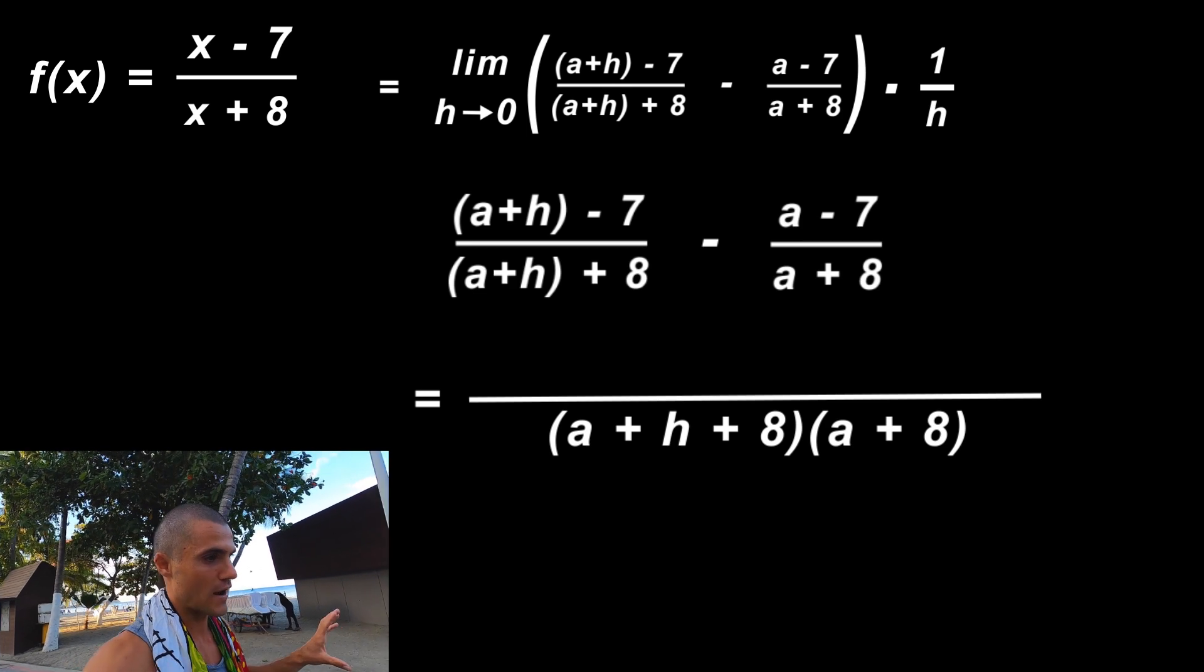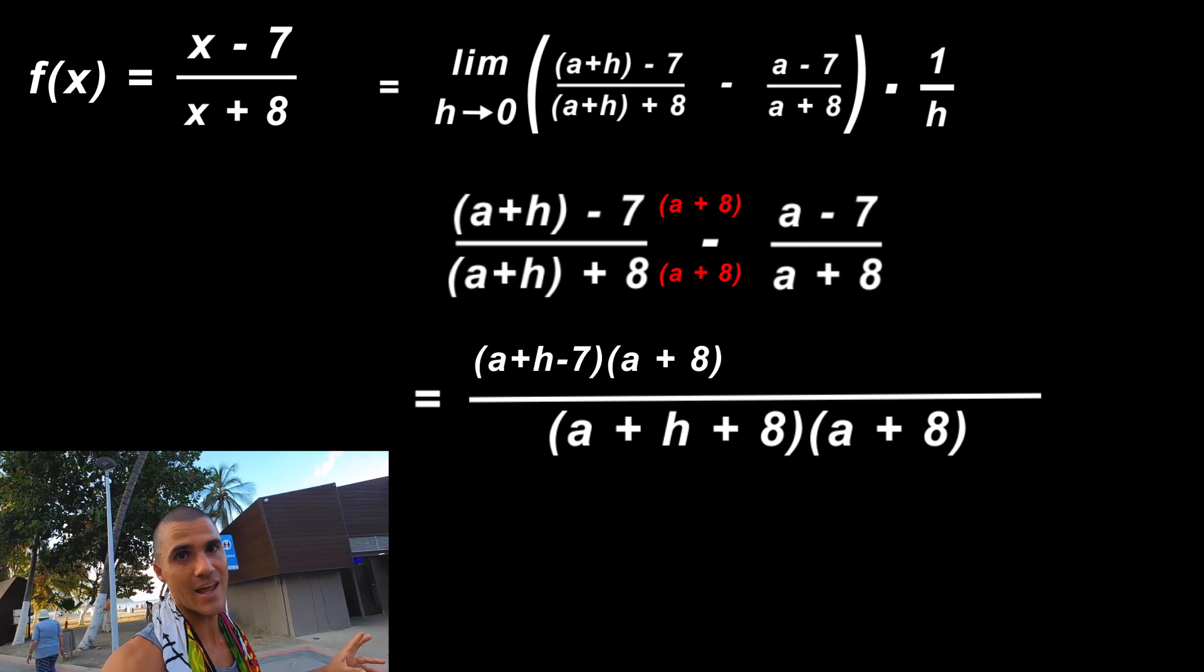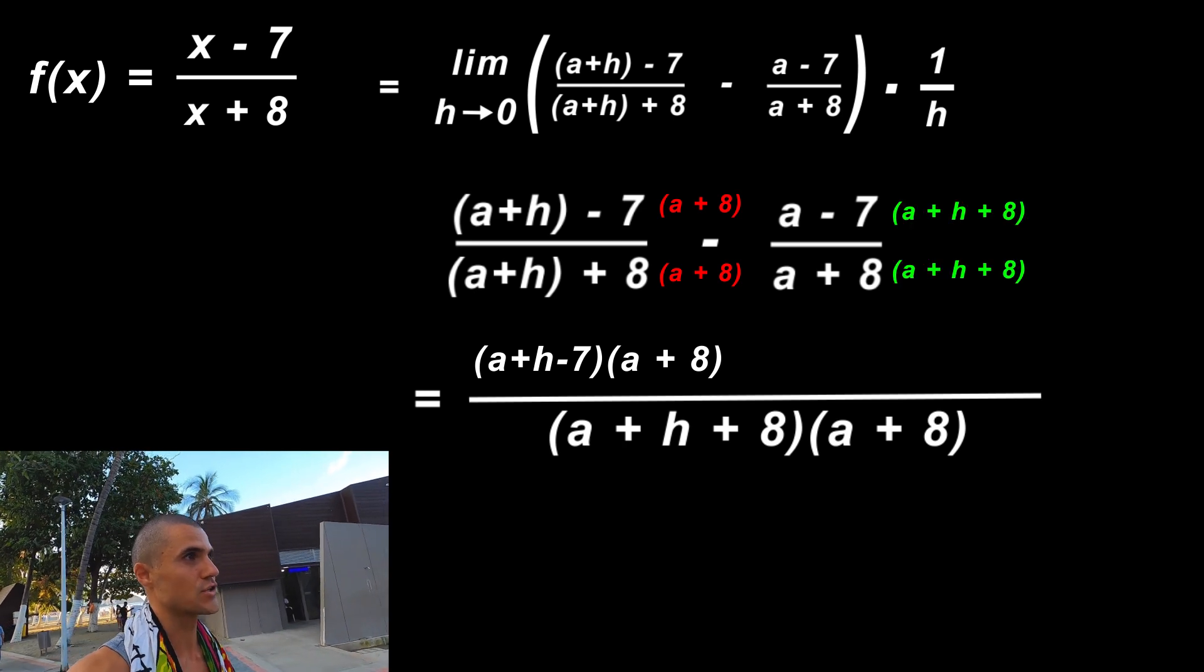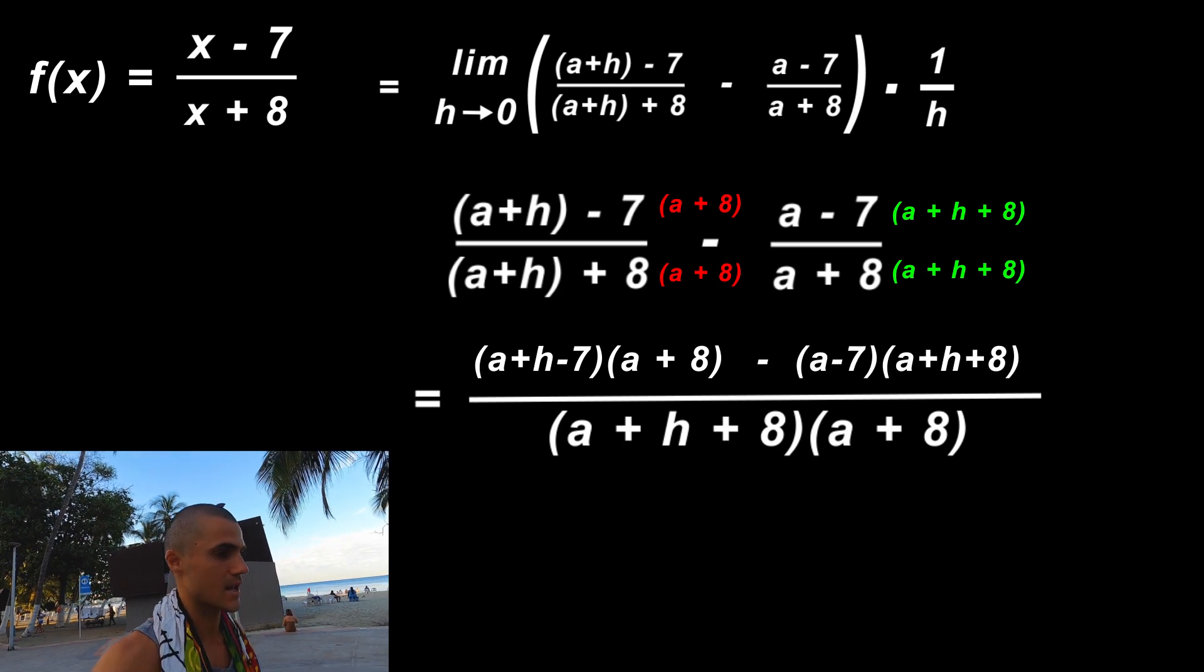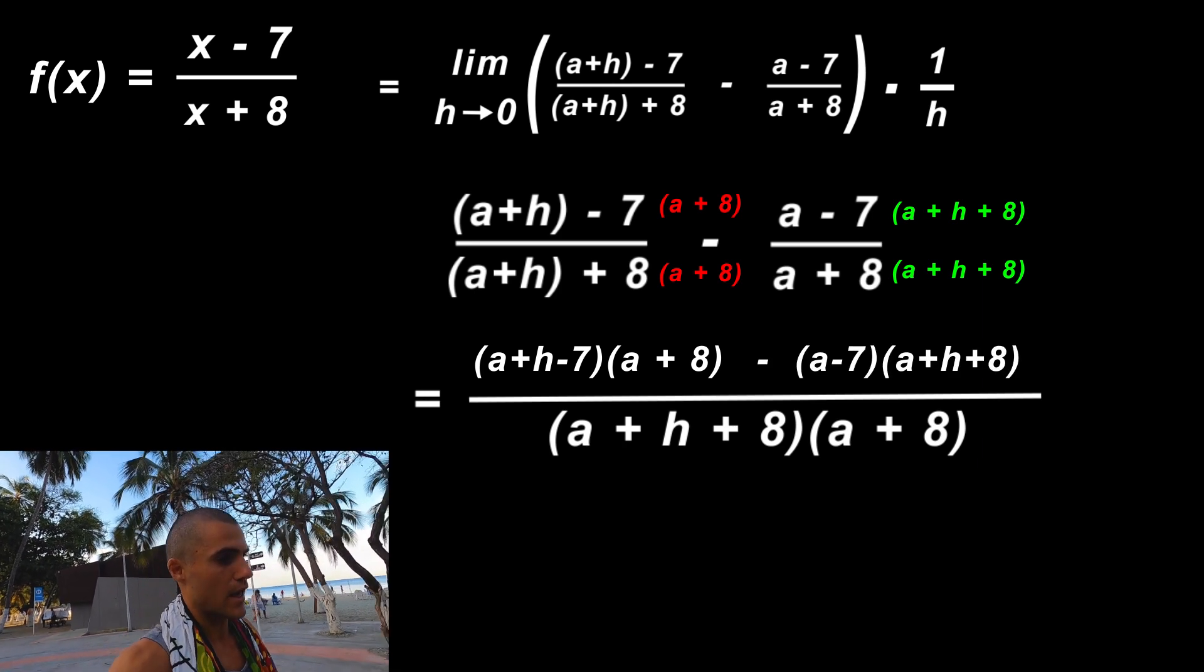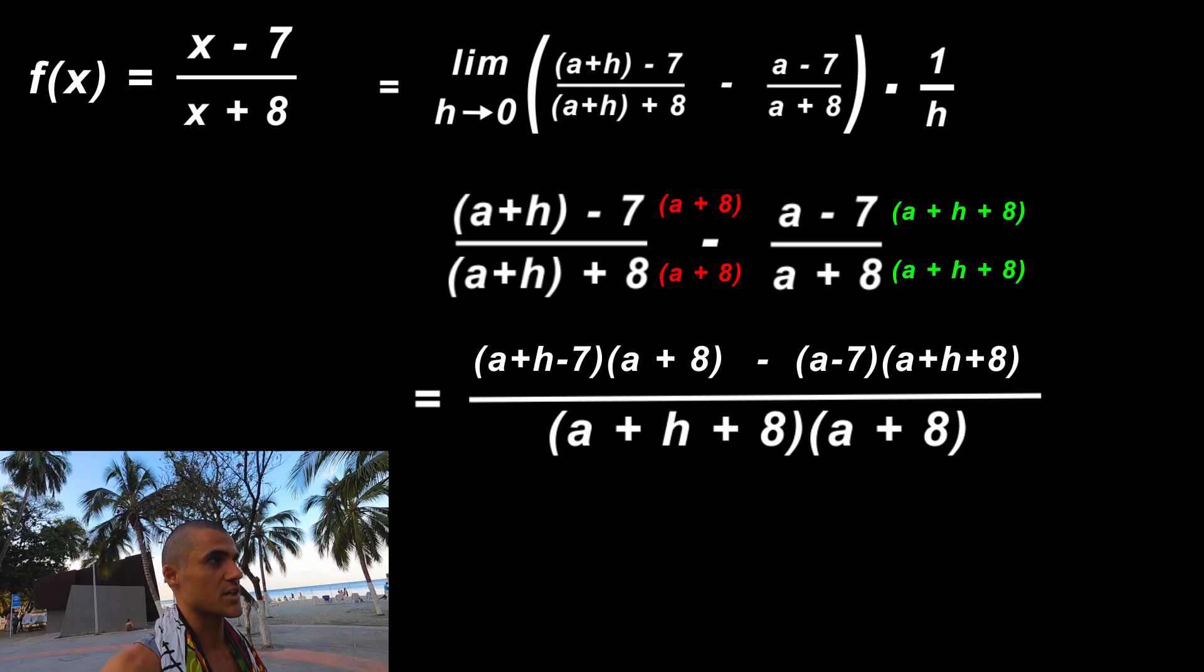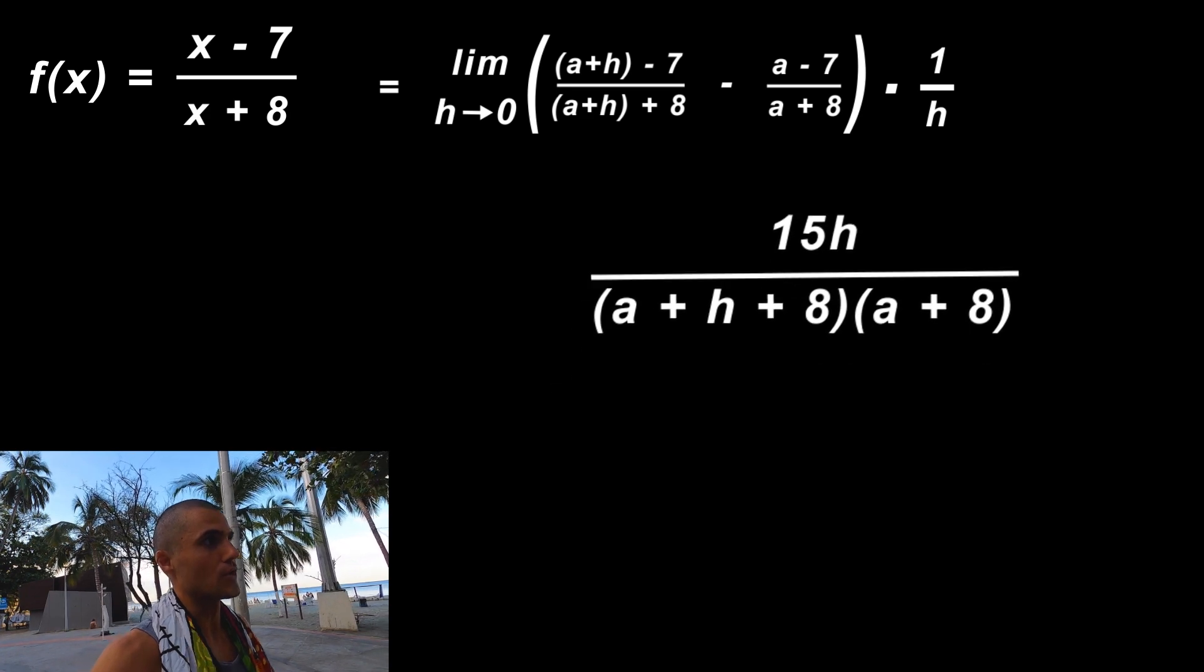That first fraction we have to multiply the numerator and denominator by (a+8), and then in the second fraction we have to multiply the numerator and denominator by (a+h+8). Once you do all of that algebra, then the numerator is just going to simplify to 15h.